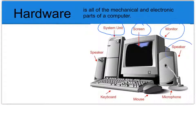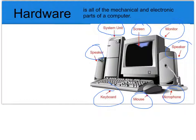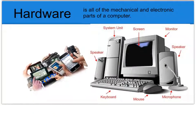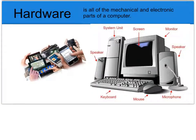You have speakers, a microphone, a mouse, keyboard, and another speaker. Those are all hardware. I like to think of hardware as the parts that I can feel and see. Hardware is also all the devices that we use, such as iPads, tablets, and phones. Those are all things that we can hold and see, and so they're classified under hardware.